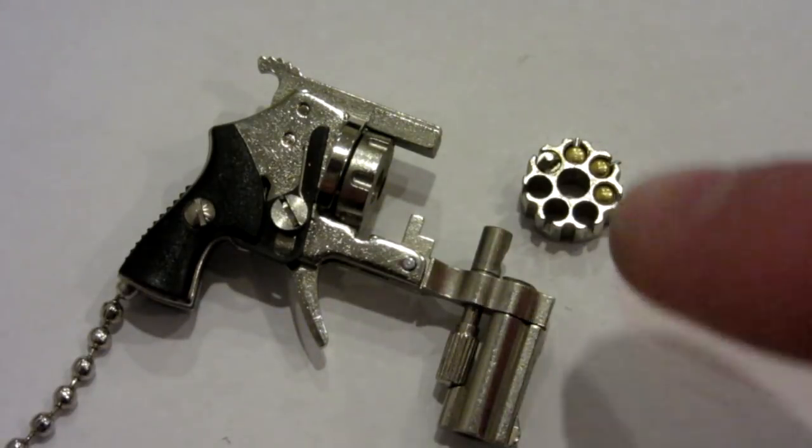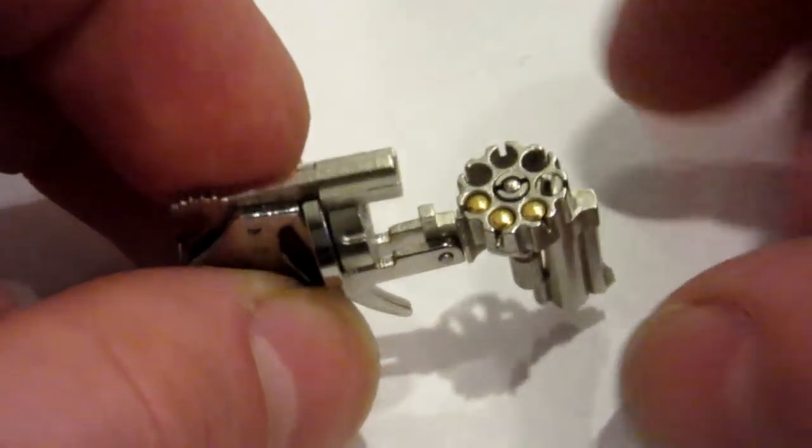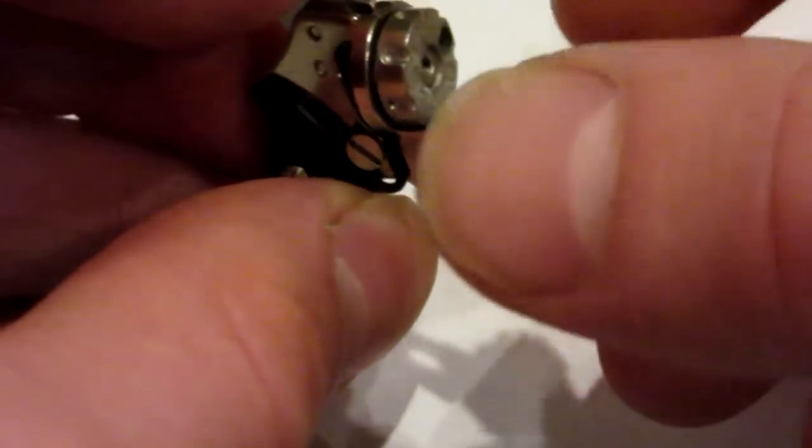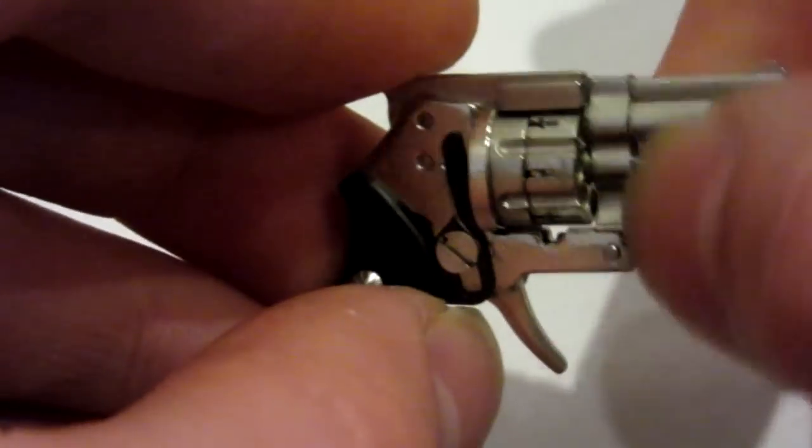There's the three shells loaded up there, and then putting it back in the gun. Just put her on the gun like that, and then line up some holes, and put her back together. Now once we twist this down, we're ready to shoot.